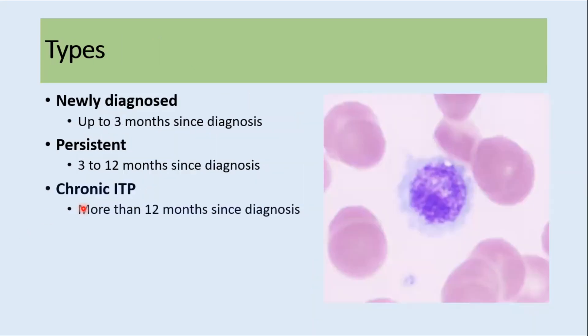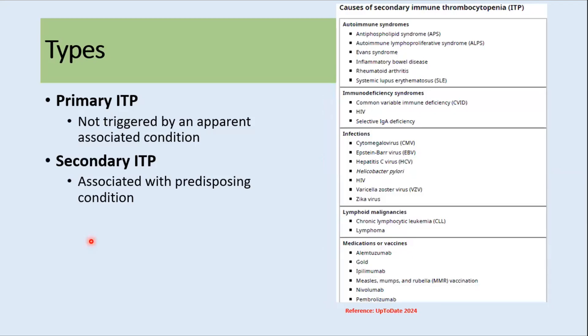ITP can be classified into newly diagnosed ITP, persistent ITP, or chronic ITP. From diagnosis up to three months is considered newly diagnosed; from three to twelve months is persistent ITP; and if ITP lasts for more than twelve months, it is known as chronic ITP.